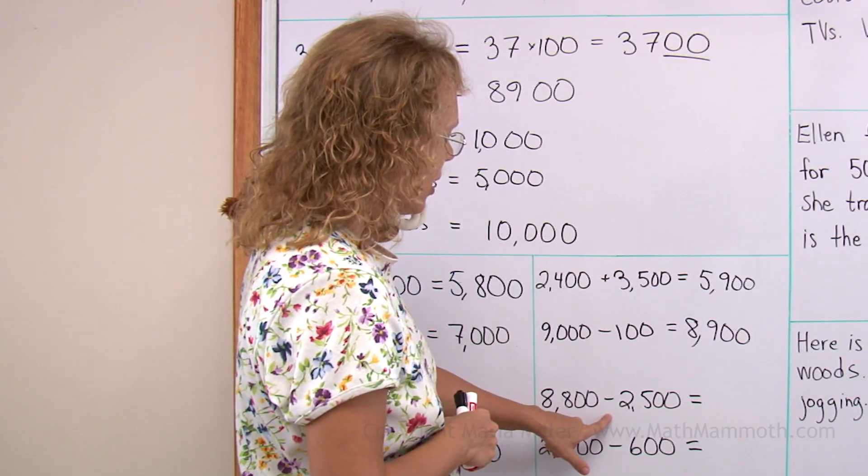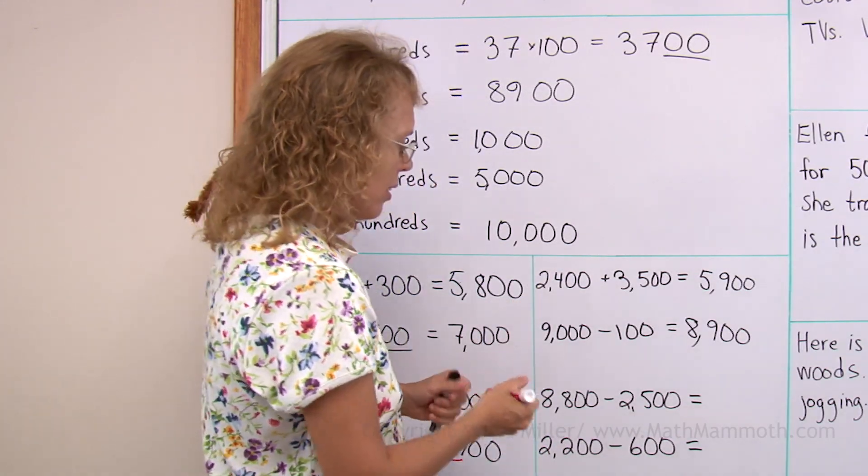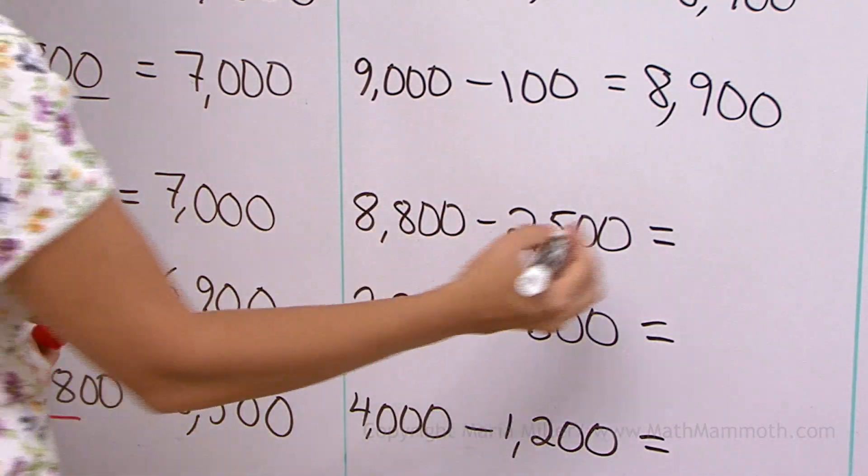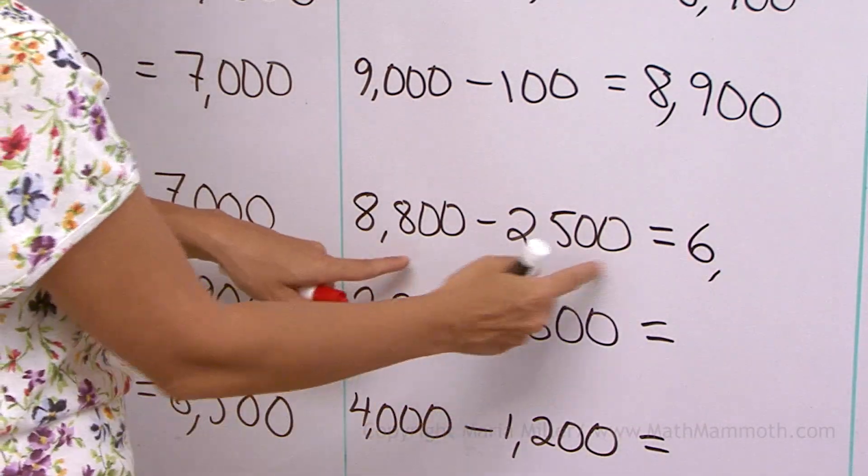8800 minus 2500. Let me just subtract the thousands and the hundreds. So we get 6000, right? And then 300.